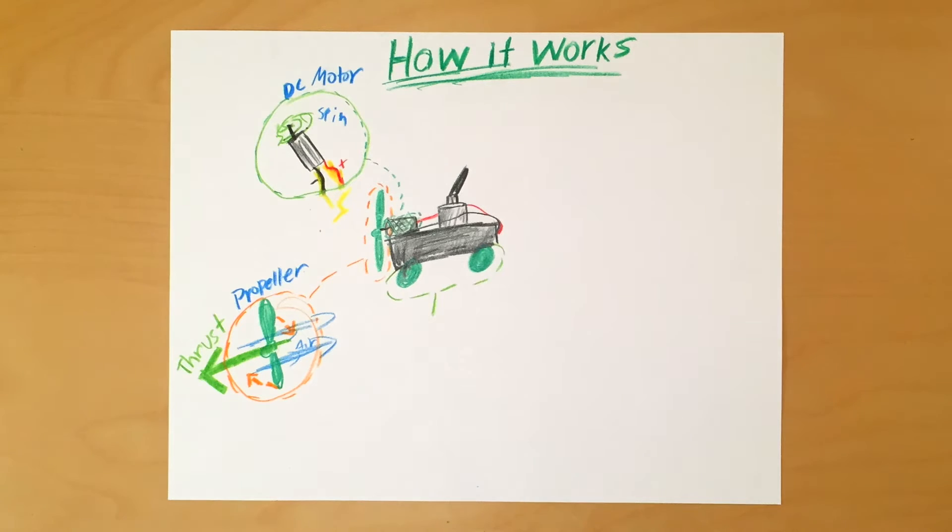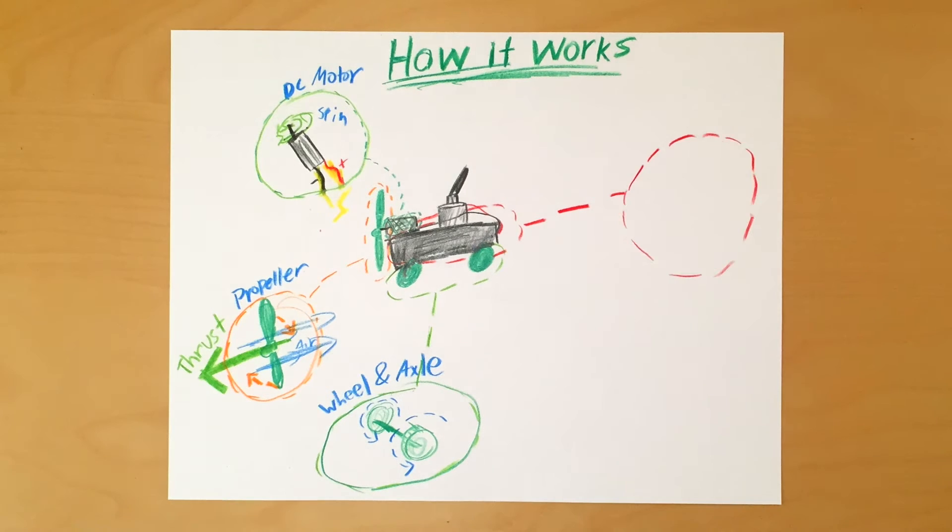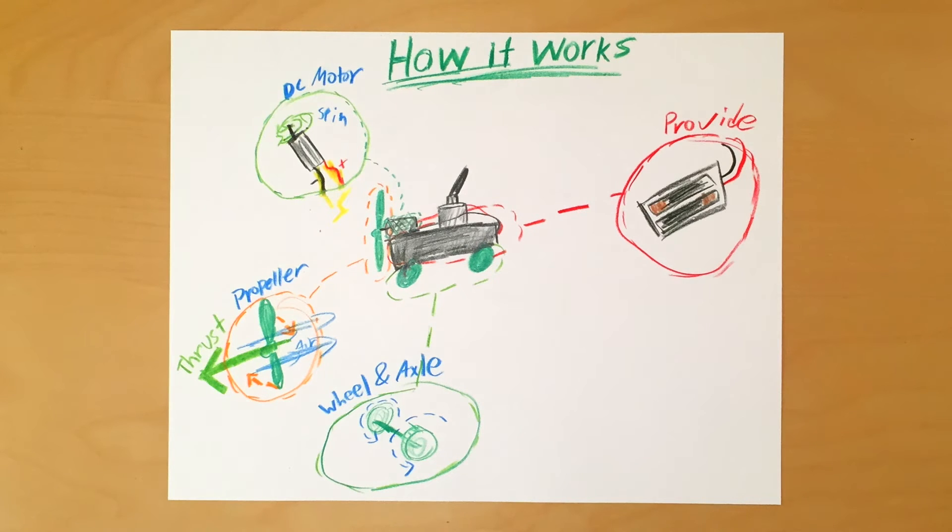To make the car move much easier, we can add wheels and axles, which reduce the amount of friction between the vehicle and the ground. Finally, the whole thing is powered by a battery pack, which also serves as a chassis for the racer.